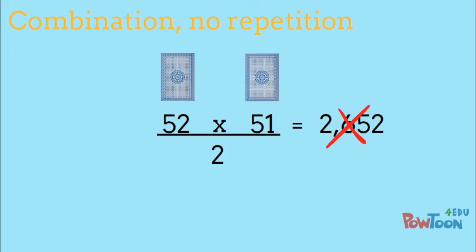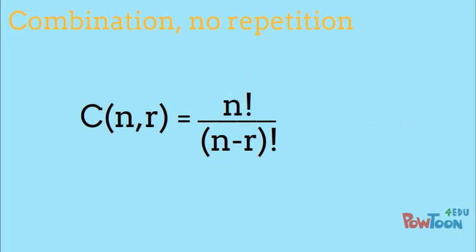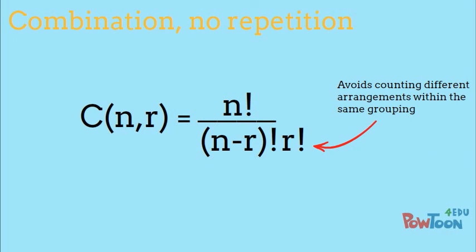The answer would be 52 times 51 divided by 2, or 1326 different two-card hands. The formula for combinations n choose r is the same as the permutation formula with an additional division by r factorial, the number of ways that r items could be arranged. This division by r factorial adjusts the formula to only count different groupings of objects, not the way the objects are arranged within each grouping.